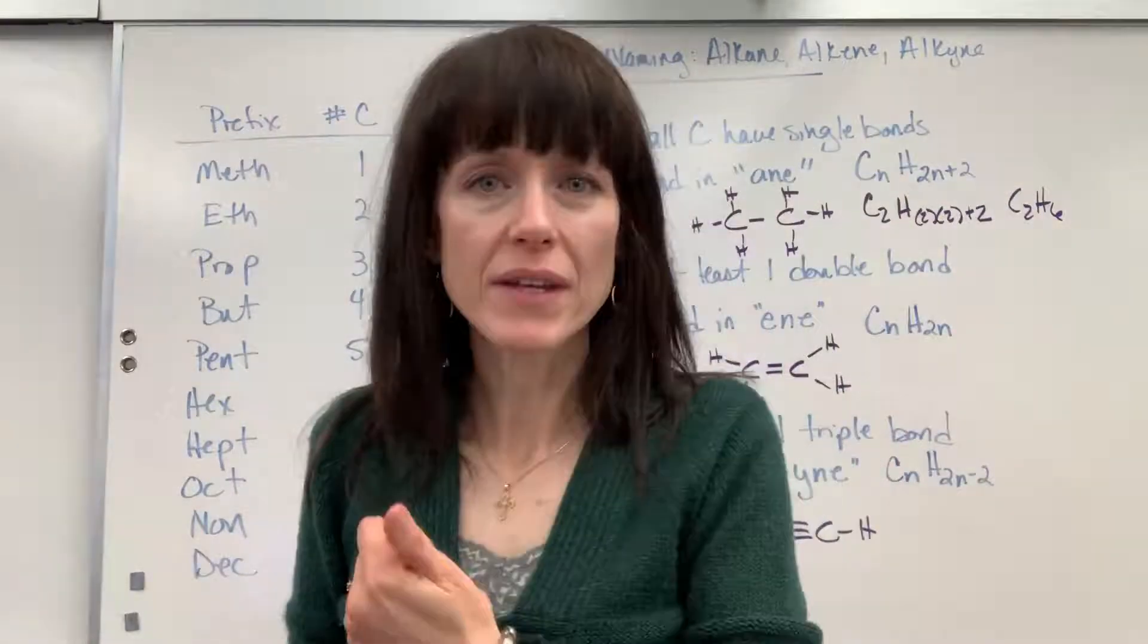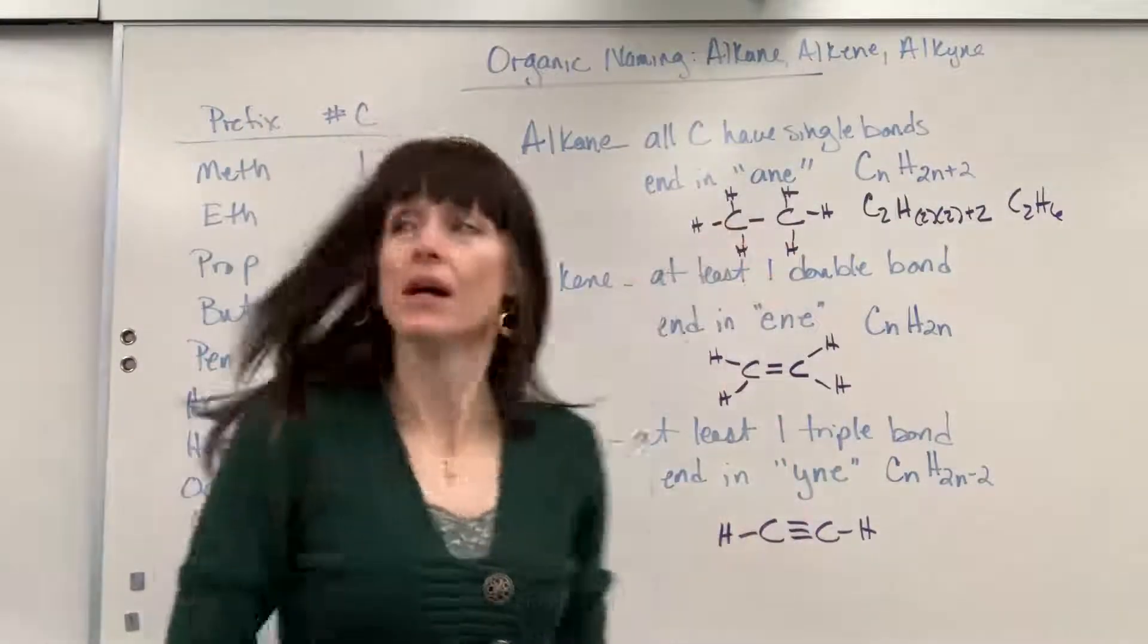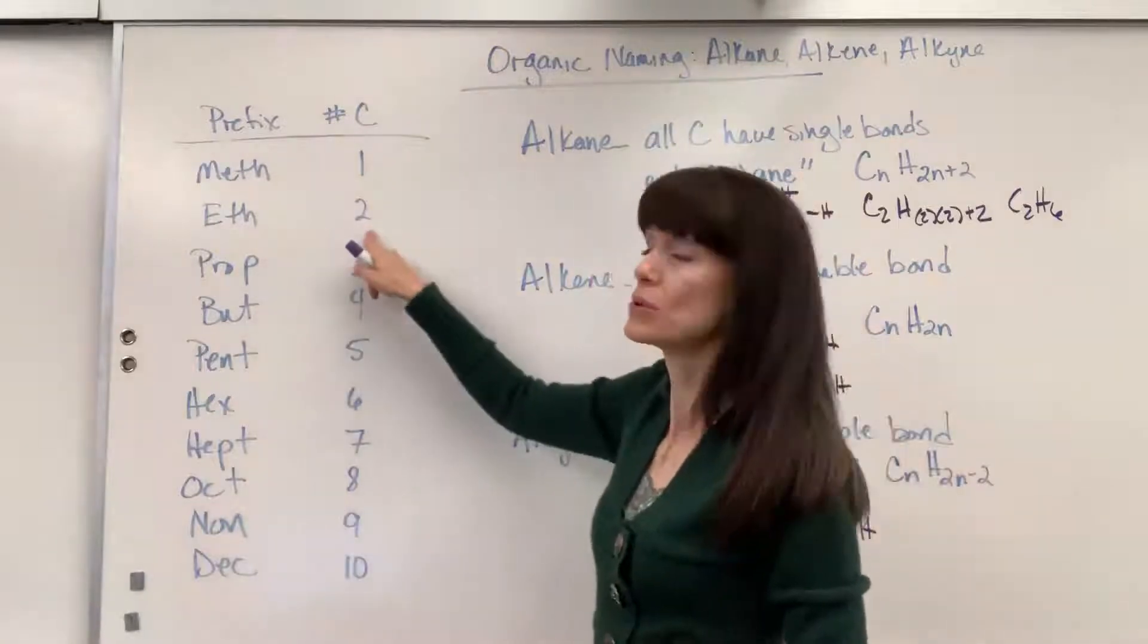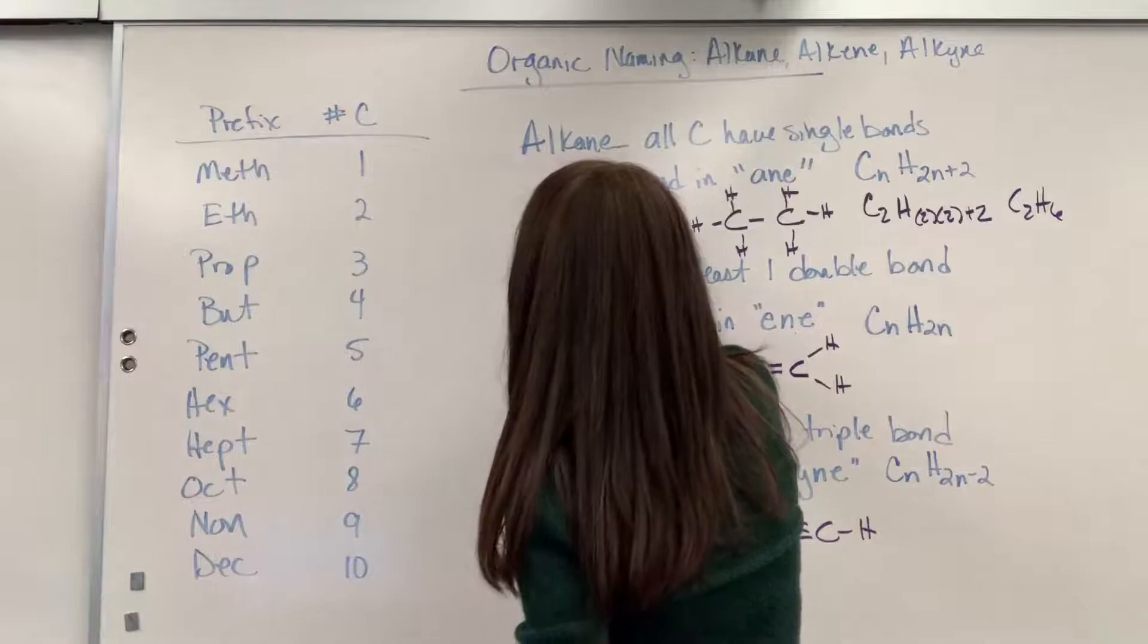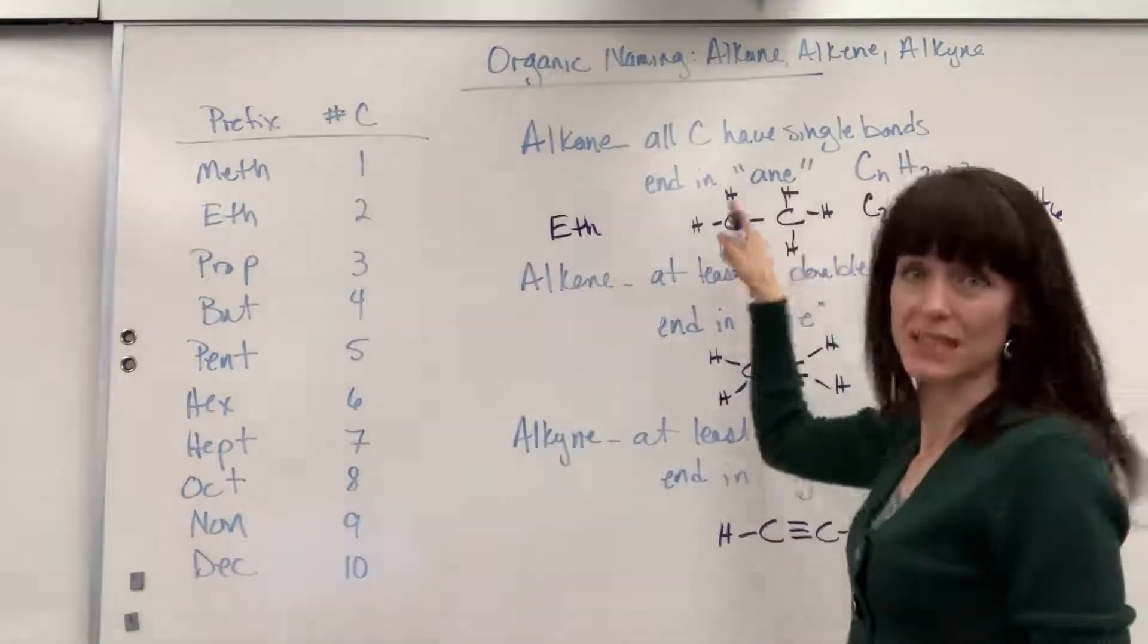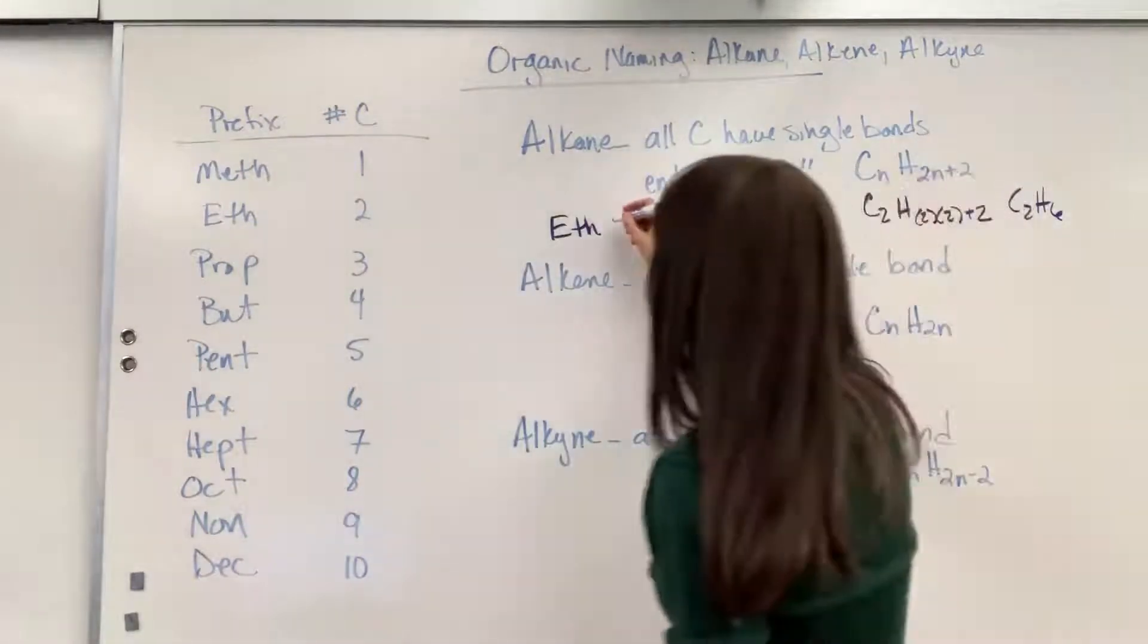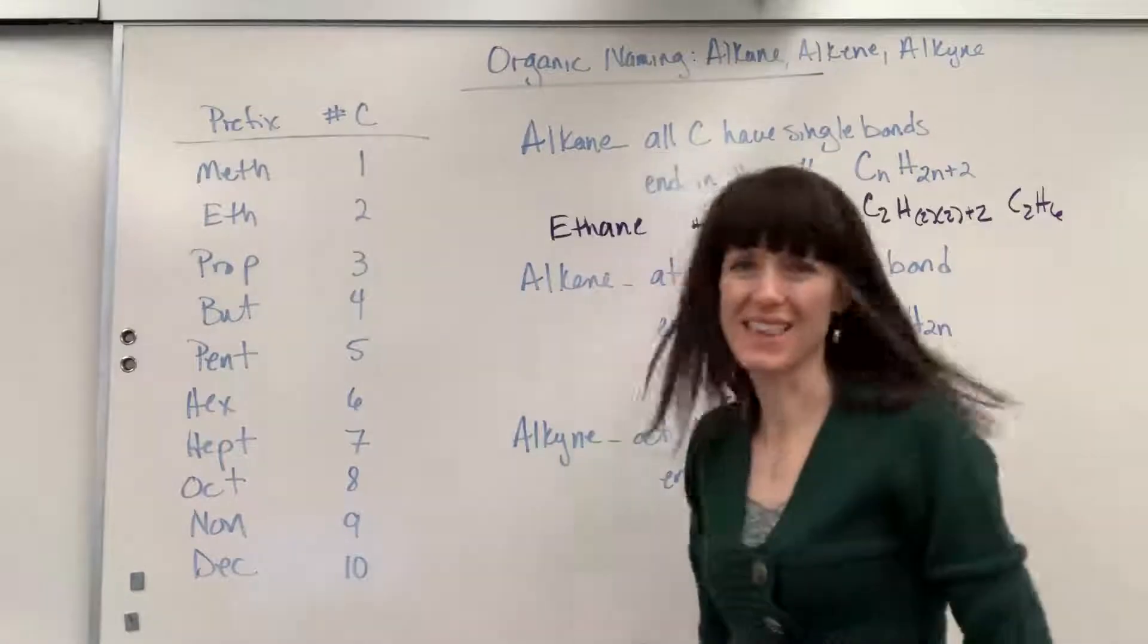I'd have C2H2 times 2 plus 2 is going to give me C2H6, and there it is. Now the name for this, I always count the number of carbons, 1, 2, and I go to my prefixes. Two carbons is called eth, so this would be eth, and then I notice there is a single bond, all single bonds between the carbons, so that is called ethane.